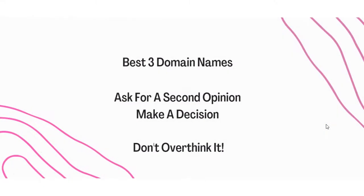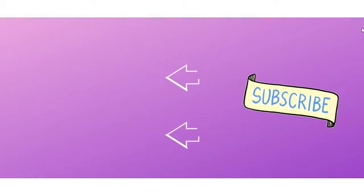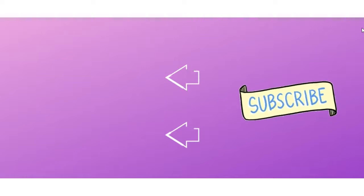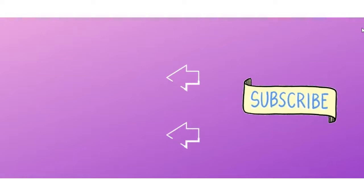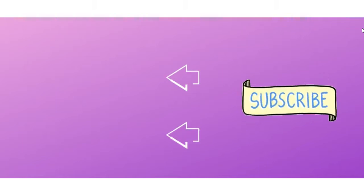Finally, with my list of 20, I would dwindle that down to my best three that I prefer. Then I would ask for a second opinion from maybe a colleague or a friend or someone you trust to give you an honest opinion. At the end of the day, what you need to do is just make a decision. Don't overthink the whole process and spend weeks or even months coming up with a domain name. That's the process I went through when picking my own domain name, and I hope you found this video helpful in getting loads of ideas and starting your affiliate marketing business.